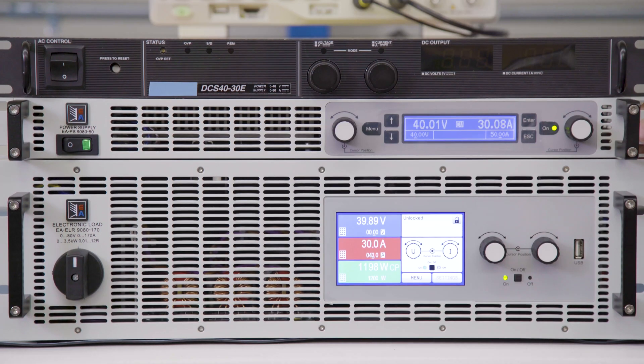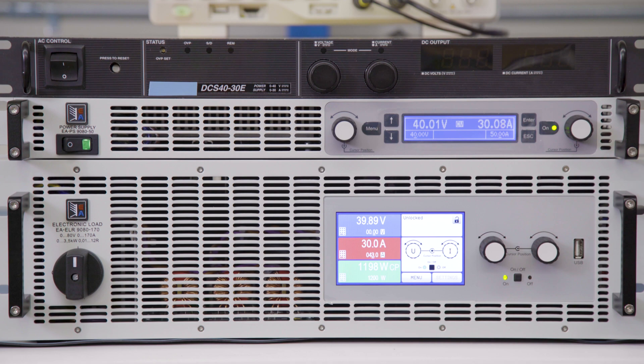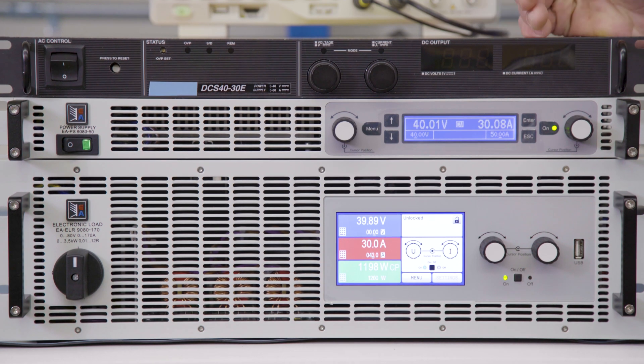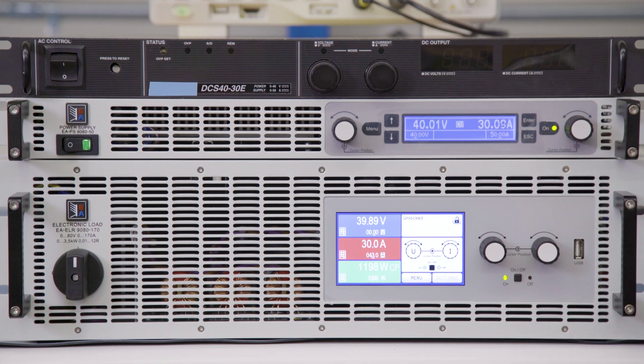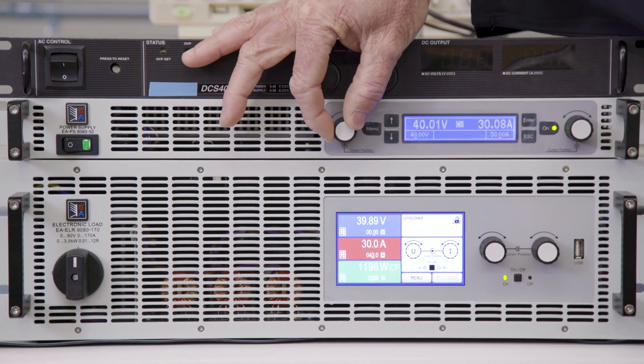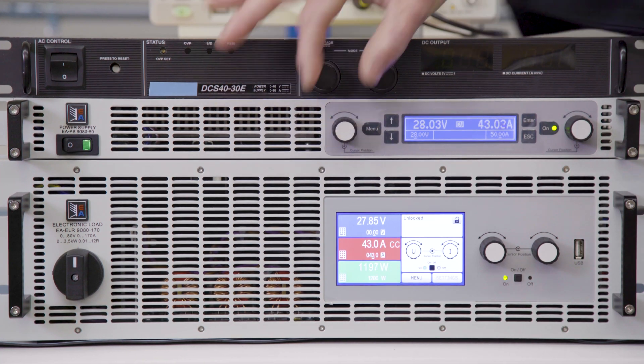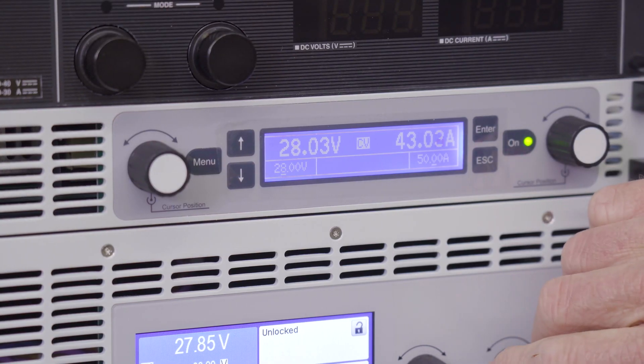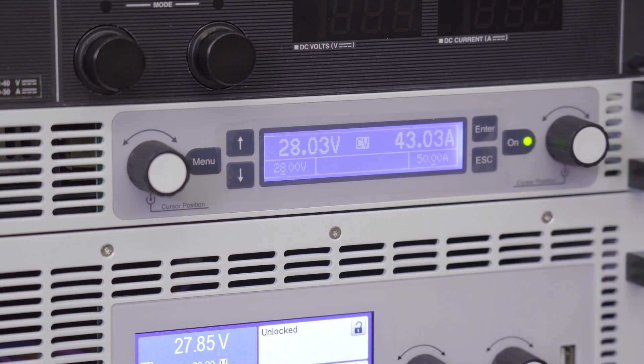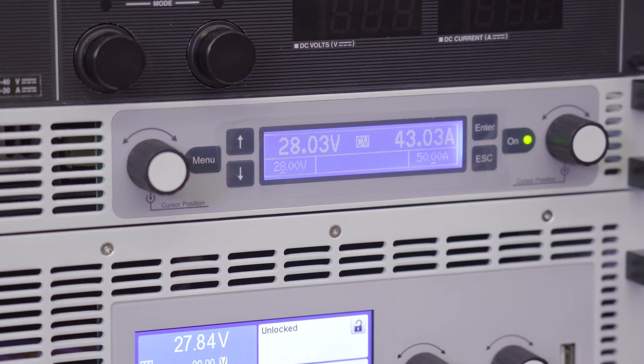So here we've powered up our EA Electro Automatic PS908050 1U power supply. And you'll see I have the same 40 volts, 30 amps programmed in. We're pulling 1200 watts. But what you'll notice then is as I decrease my voltage down to let's say that 28 volts, the power supply will allow me to actually deliver more current. So you can see now we're at 43 amps, still maintaining the 1200 watts.